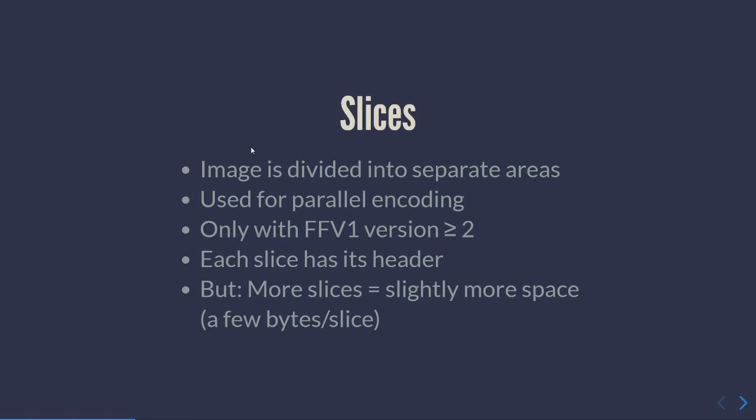When I picked up FFV1 in 2009, it could only do a full frame or field with no parallel processing, so we were always stuck with the performance of one CPU core and couldn't scale beyond it. I then got engaged in making a multi-threaded version of FFV1, and Michael Niedermaier introduced these slices to spread them across CPU cores.